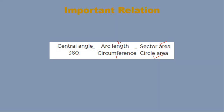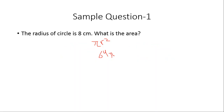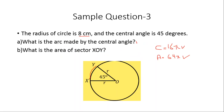So we use this relation — central angle divided by 360 equals arc length divided by circumference. The central angle is 45 degrees, so 45 divided by 360 equals x (the unknown arc length)